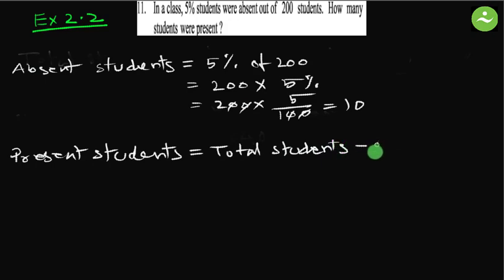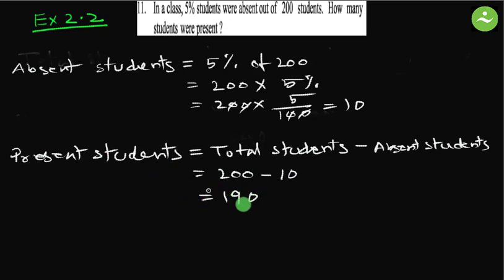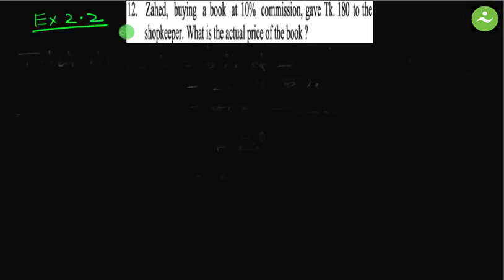Present students equals total students minus absent students, equals 200 minus 10, equals 190. And that is the number of present students — that is the answer. Question number 12.